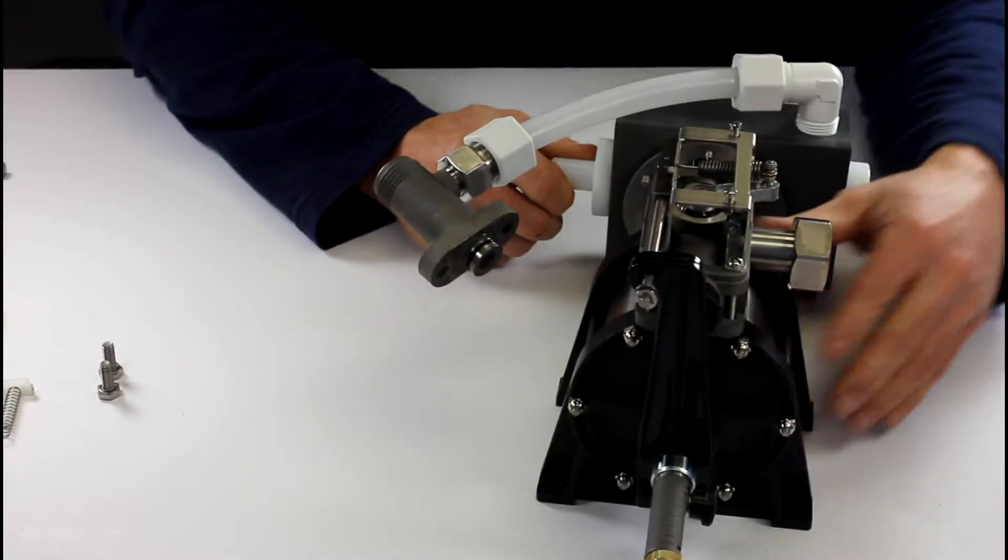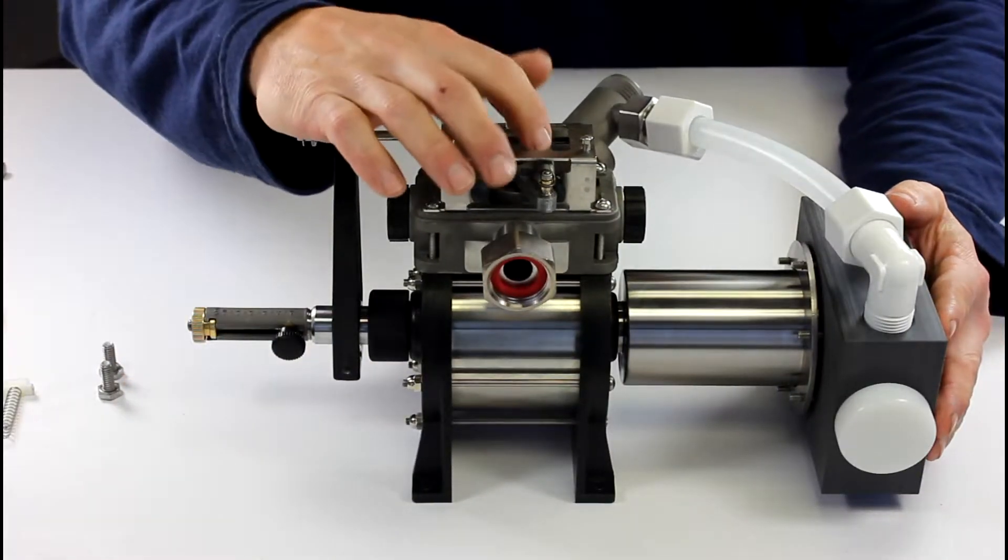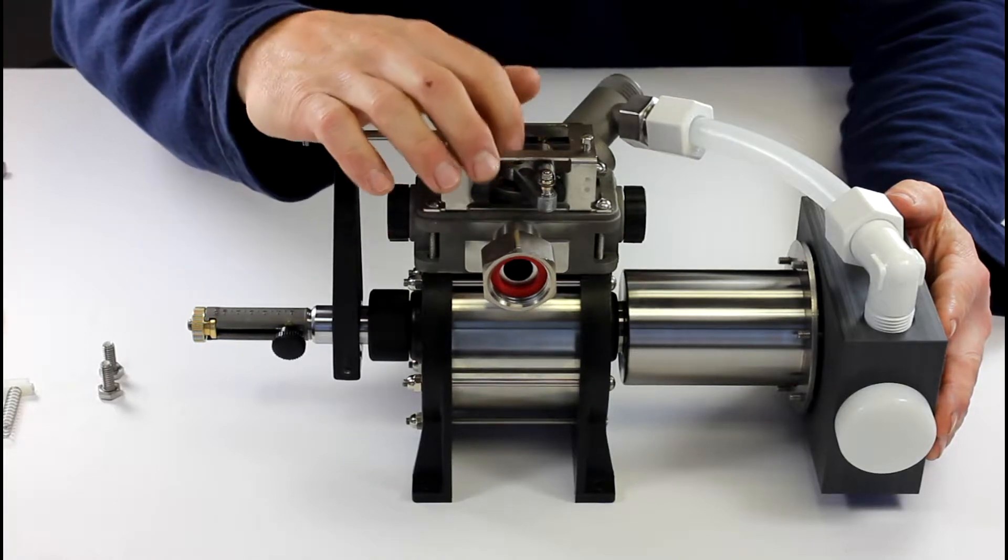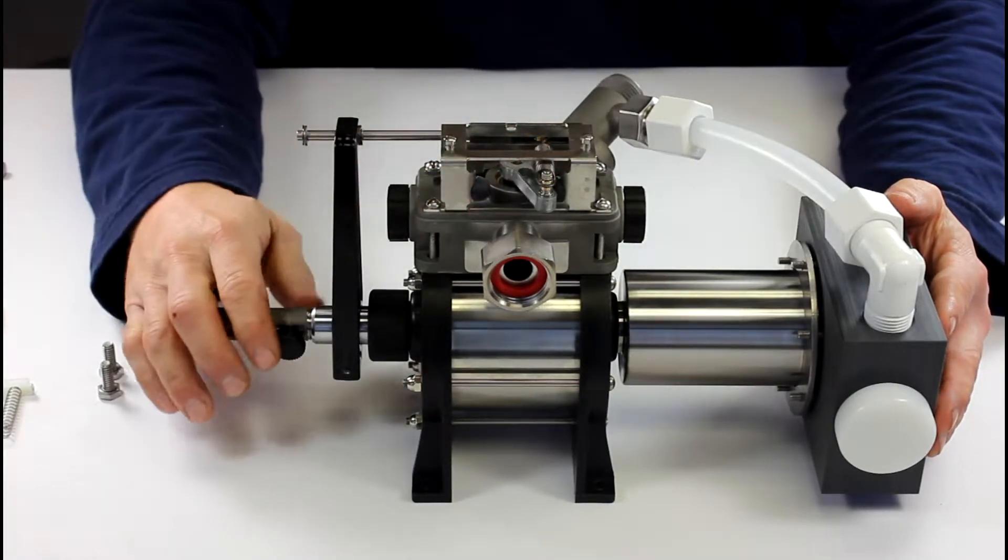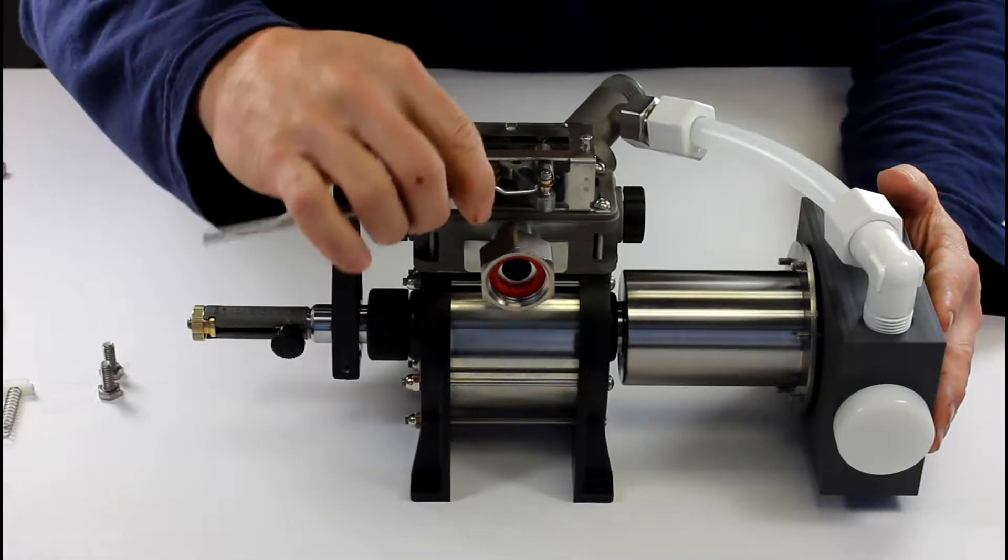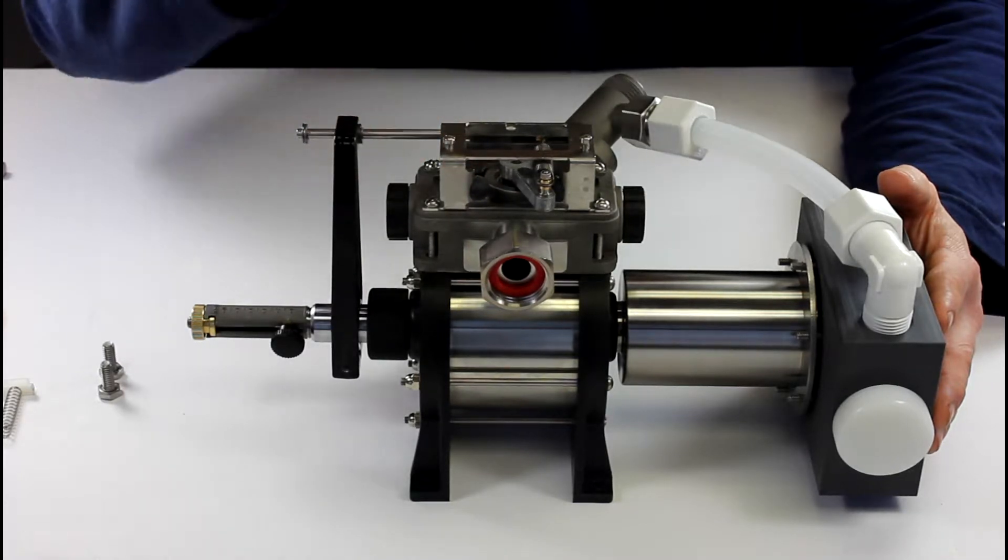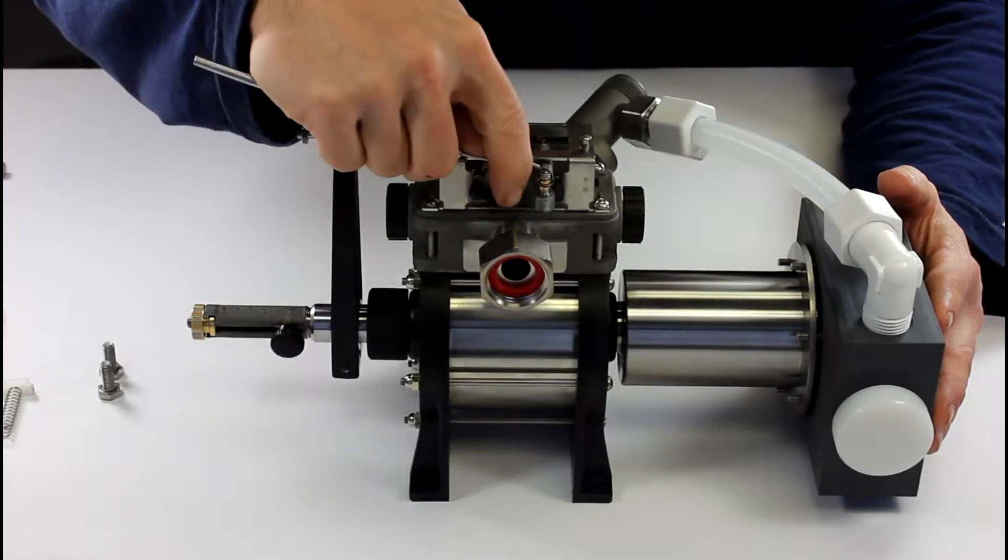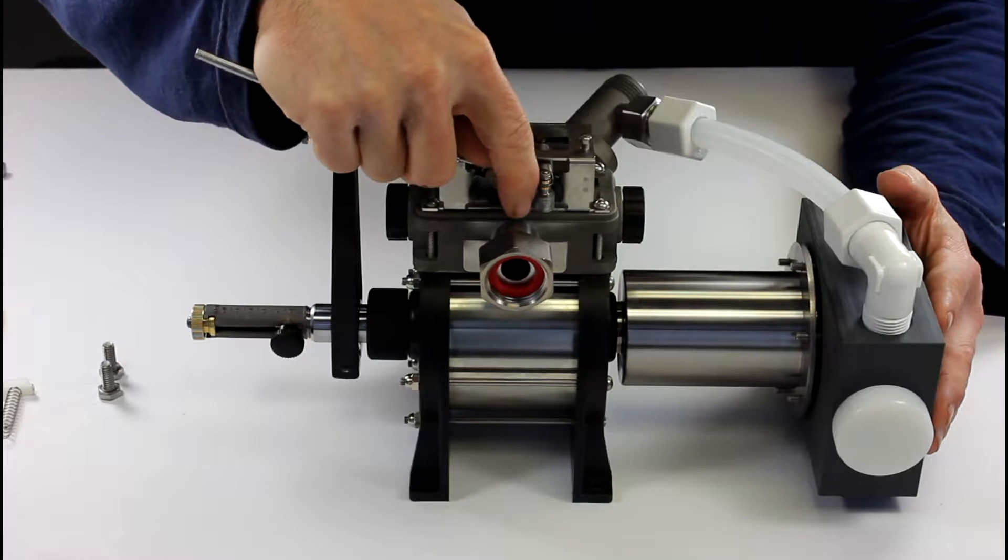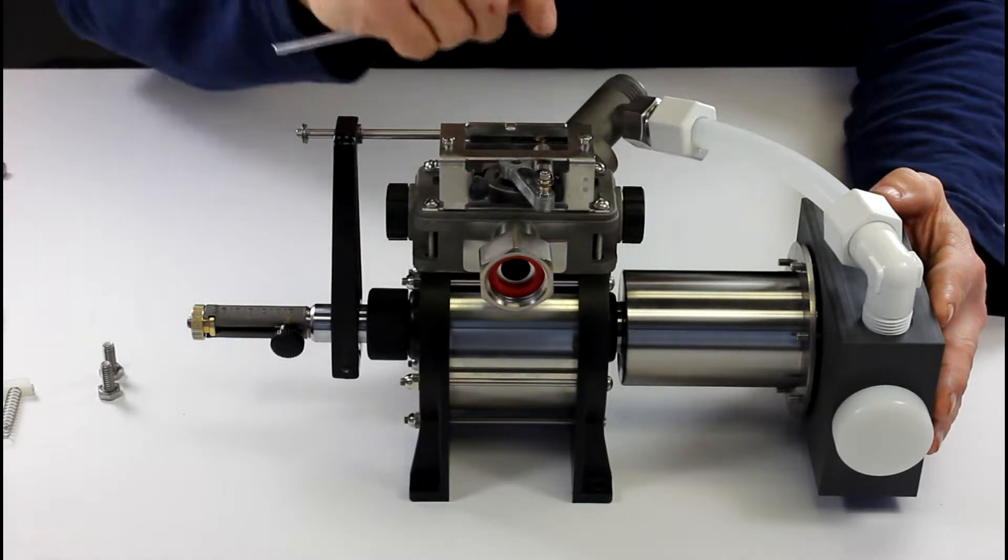Now what you're going to do is remove this spring off of this toggle lever assembly. To do that you can use a pick, get underneath, pull, pry it off. You know, a standard screwdriver, really small screwdriver, you can get in here and pry it out, pop it off that way.